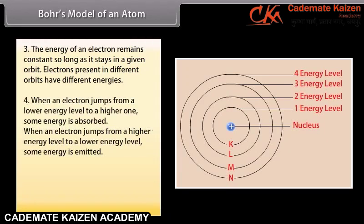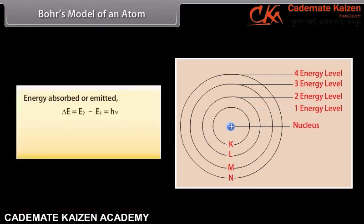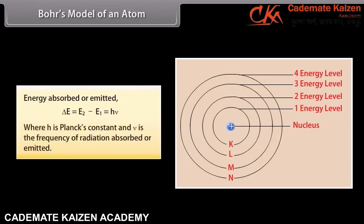When an electron jumps from a lower energy level to a higher one, some energy is absorbed. When an electron jumps from a higher energy level to a lower energy level, some energy is emitted. The amount of energy absorbed or emitted is given by the difference of energies associated with the two levels. Energy absorbed or emitted: ΔE = E₂ − E₁ = hν, where h is Planck's constant and ν is the frequency of radiation absorbed or emitted.